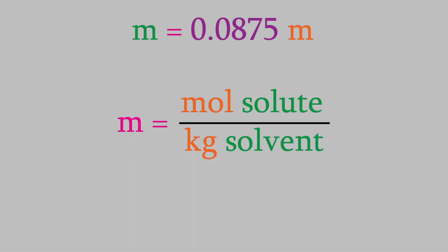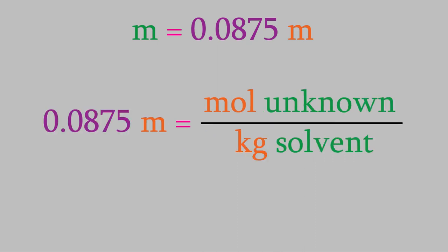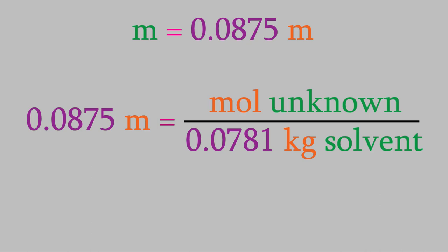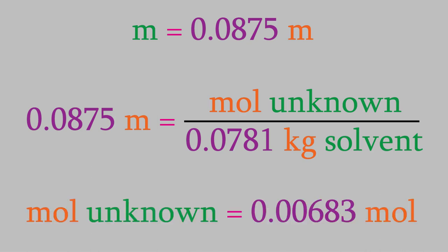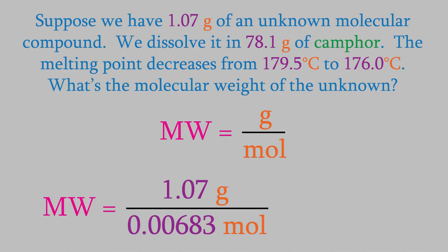That's where the molality we just calculated comes in. You might remember that molality is the moles of solute divided by the kilograms of solvent. We just calculated what the molality is, and we know the kilograms of solvent, so we can find out the moles. We found out that the molality is 0.0875 m, and the problem tells us that we have 78.1 grams of the solvent, camphor. That's 0.0781 kilograms. When we solve for the moles, we get 0.00683 moles. So now we can finally get the molecular weight. We divide the mass of the unknown by the moles, and we get 157 grams per mole. So that's our molecular weight.